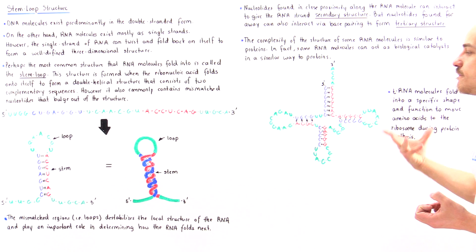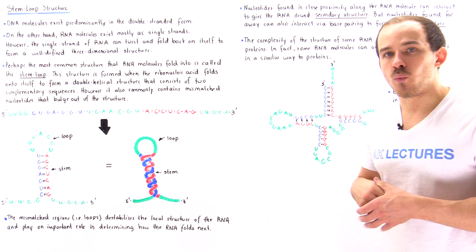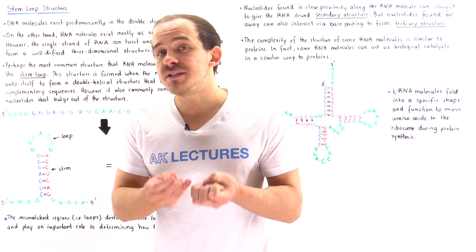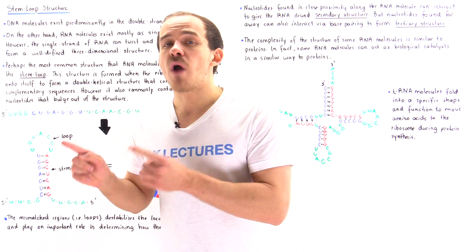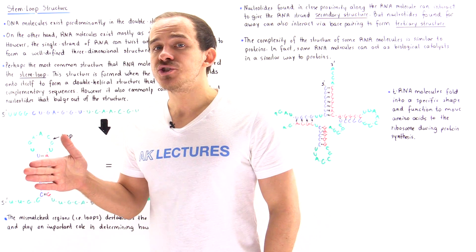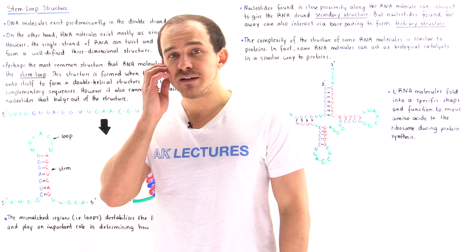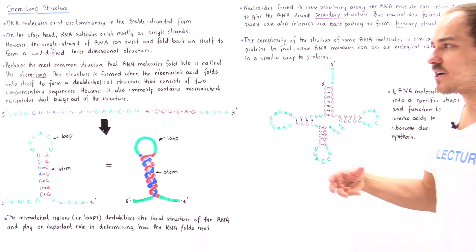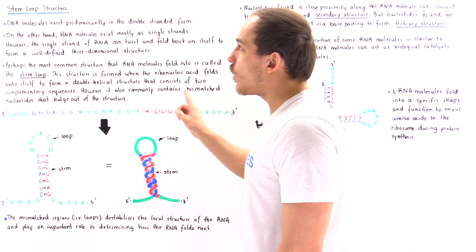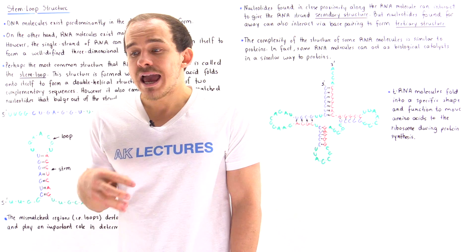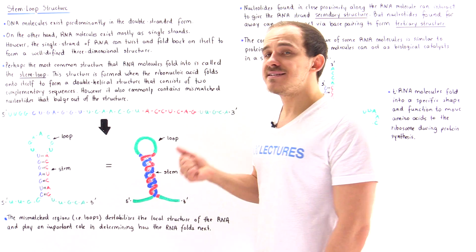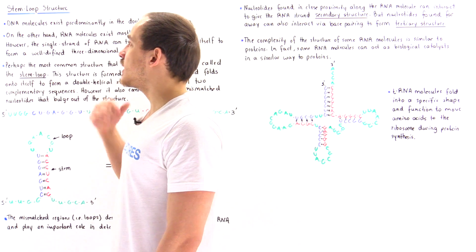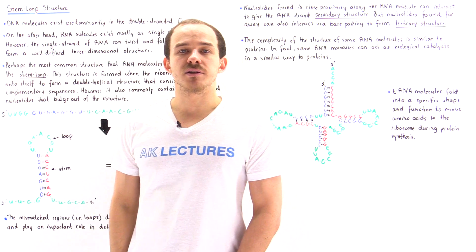Because of this specific structure of the RNA molecule, it is able to find and carry the specific amino acid to the ribosome, allowing the elongation and synthesis of protein molecules. So, just like proteins can form secondary and tertiary structure, RNA molecules can also exist as molecules that contain secondary and tertiary structure. The most common type of structure is the stem loop structure of RNA molecules.